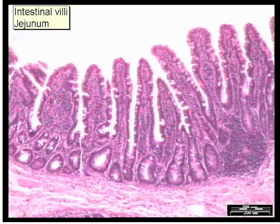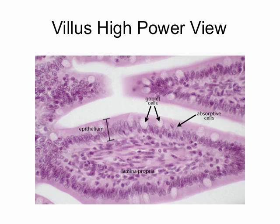The next slide keys in on a high power view of one villus. In that view, the columnar epithelium and the goblet cells are both well demonstrated. Don't forget to pause the movie and spend some time on this slide and the other slides as well. I'm going to go through them rather quickly, but you should spend much more time looking at this than I have spent dictating it.